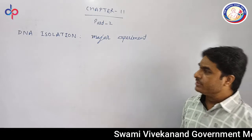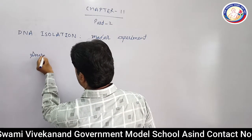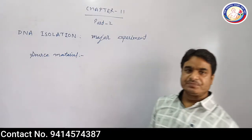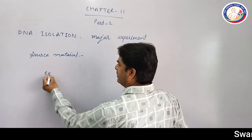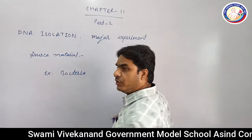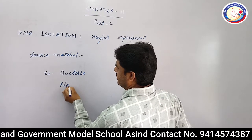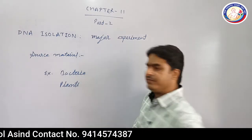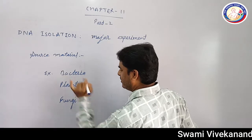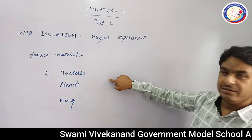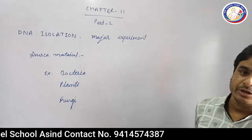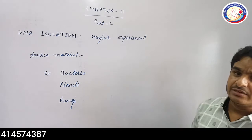In this topic we can use different source materials for DNA isolation. You can use bacteria as a source of DNA. You can use plants as a source of DNA, and you can use fungi as well. If you want to isolate DNA from a cell, you will have to follow a standard protocol, which is also part of your practical examination and we will discuss it later on.